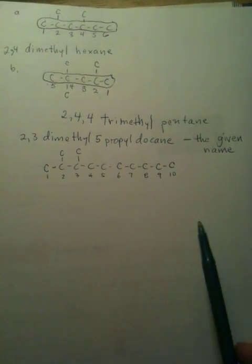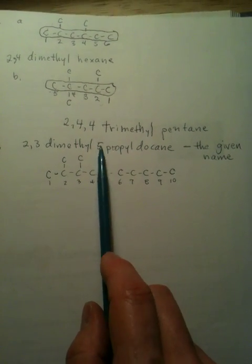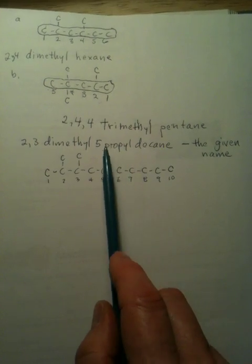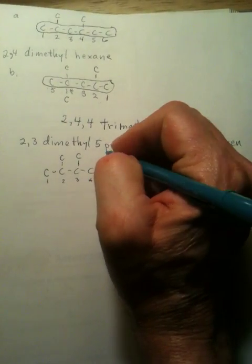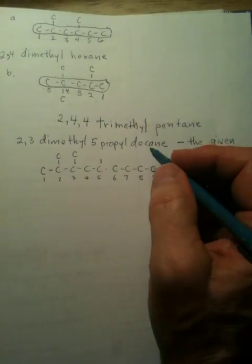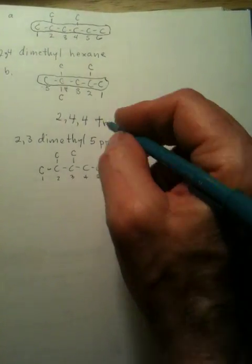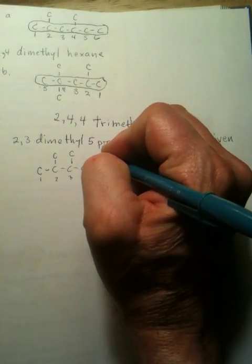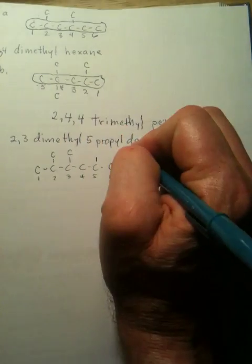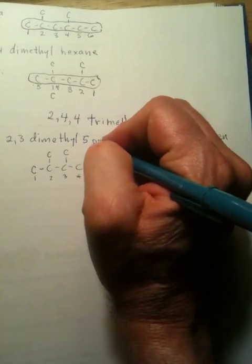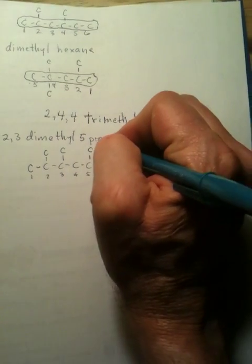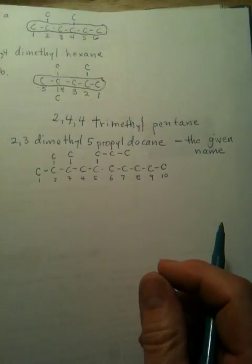As you see, this is pretty easy. Now, I have a propyl on number five. So, a propyl is three carbons, and I got a little too close here, so I'm going to have to write the carbons sideways. And it doesn't really matter whether you write them going up, left, or to the right. So that's one, two, three carbons.